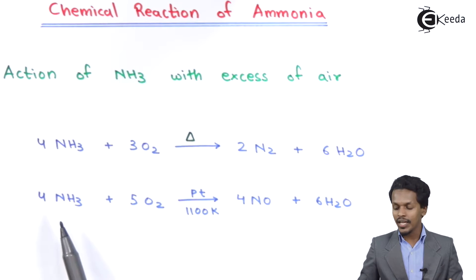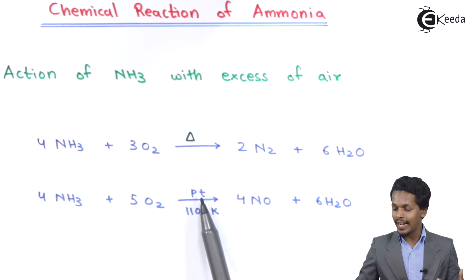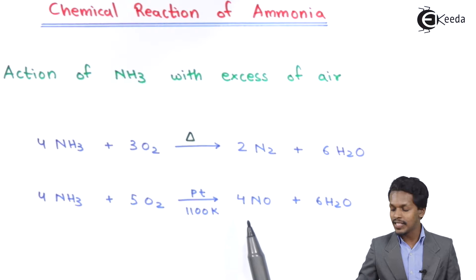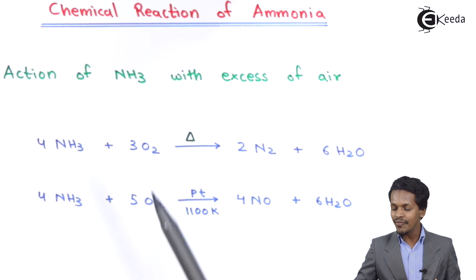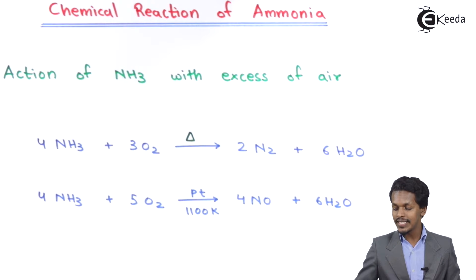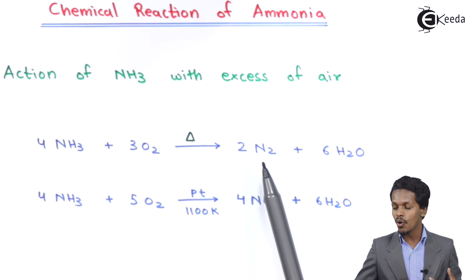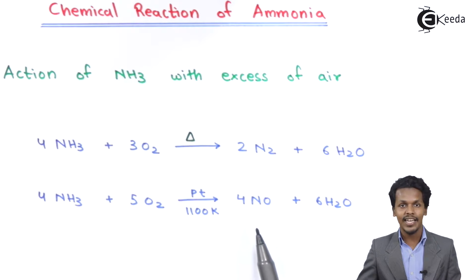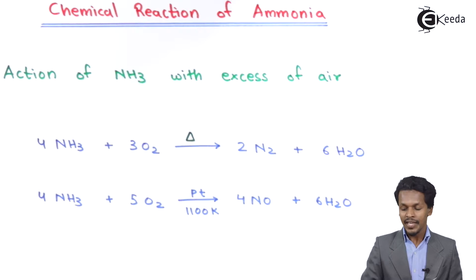However, if we react ammonia with oxygen in the presence of platinum as a catalyst at a temperature of 1100 Kelvin, the product we get is 4 moles of nitric oxide along with 6 moles of water. So there are two different reactions depending on the catalyst used: without catalyst we obtain nitrogen, and with platinum we obtain nitric oxide.